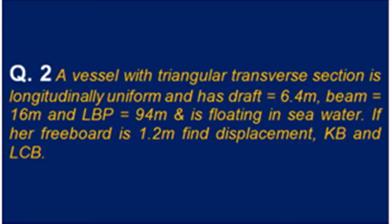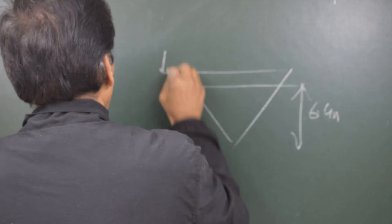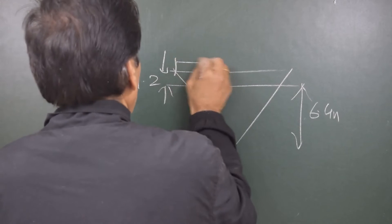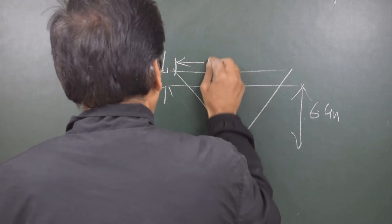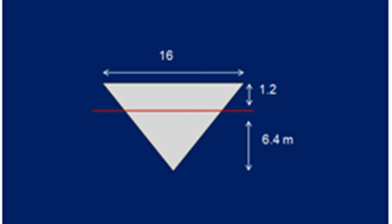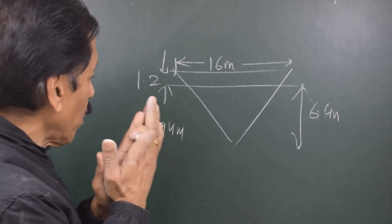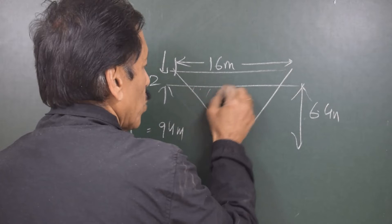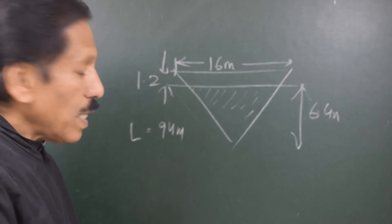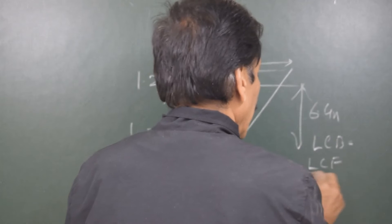The second question: a vessel of triangular transverse section. The draft is 6.4 meters, freeboard is 1.2 meters, beam is 16 meters, and length is 94 meters. We want to find KB and LCB. Since the transverse underwater area is uniform for the entire length, LCB equals LCF equals L divided by 2, which is 47 meters.